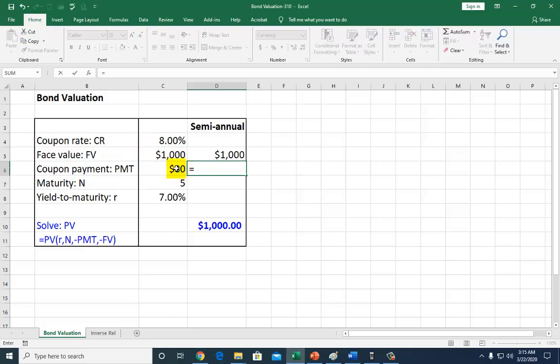slash 2 to divide by 2 to give you the semi-annual coupon rate. And then maturity period is, hit equal, click on this 5 years, but you multiply it by 2 to get the number of semi-annual periods contained in 5 years. And finally, the required rate of return equals 7%. You've got to divide it by 2 so as to get the semi-annual equivalent of 3.5%.